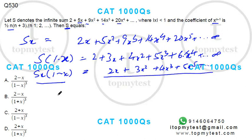you will get s into 1 minus x whole squared should be equal to 2 plus x plus x squared plus x cubed plus x to the power 4 plus so on.